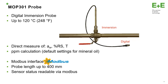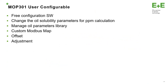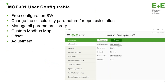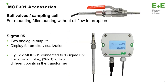Another feature is the free configuration software — the user can change the solubility parameters for the PPM calculation. It means if the oil is a mineral oil, you can change the solubility parameters and have PPM calculation for other oil types. In addition, the user can manage an oil parameters library, build a custom Modbus map, so with one request you can get all the parameters. It's also possible to adjust and perform an offset.